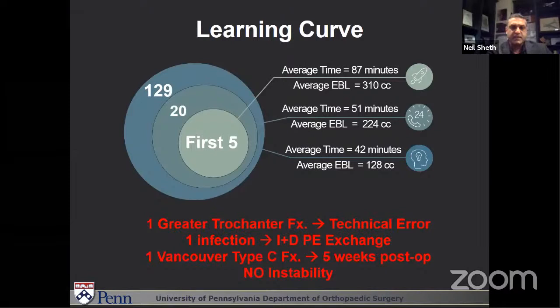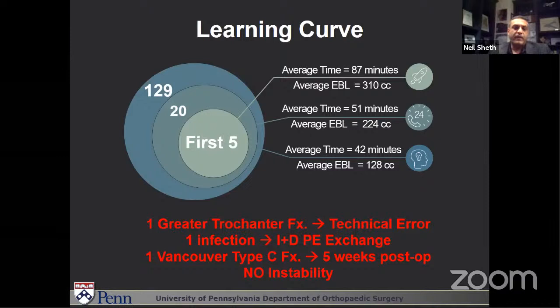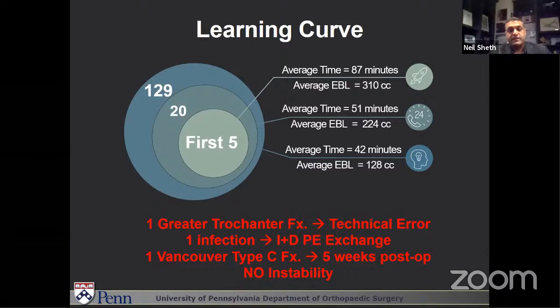Looking at those first 130 to 150 cases, we had one greater trochanter fracture — my technical error — I could not get the femoral head out, and as I was trying to make my neck cut with the saw, the corner of the saw blade hit the greater trochanter, creating that fracture. We had one infection requiring an I&D and poly exchange, and one periprosthetic fracture — a type C fracture that occurred five weeks post-op when the patient slipped and fell in the alley walking out of the hospital. We had no episodes of instability in those first 130 cases.